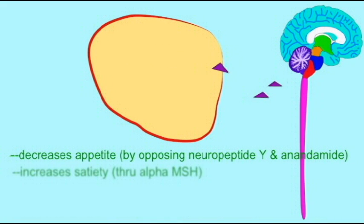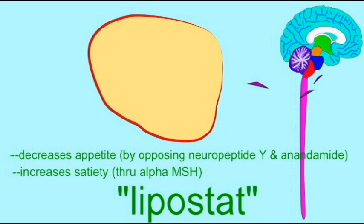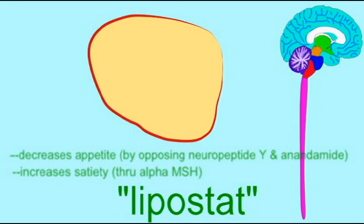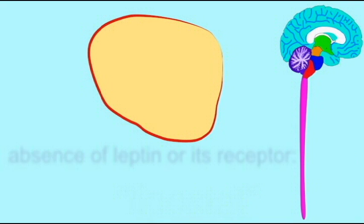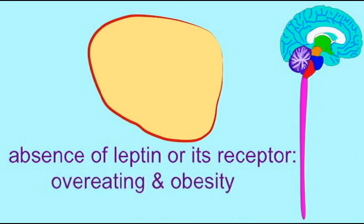Leptin travels to the brain and as a result the hypothalamus can measure how much adipose is present in the body. As a result, it serves as a lipostat telling the hypothalamus when we have eaten enough and when we should be satiated as opposed to being hungry.